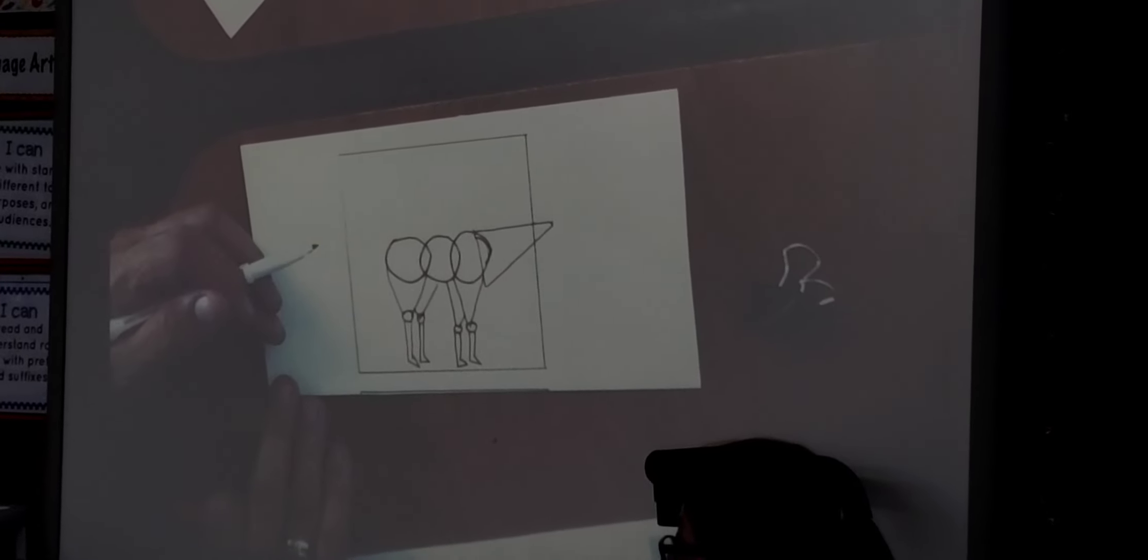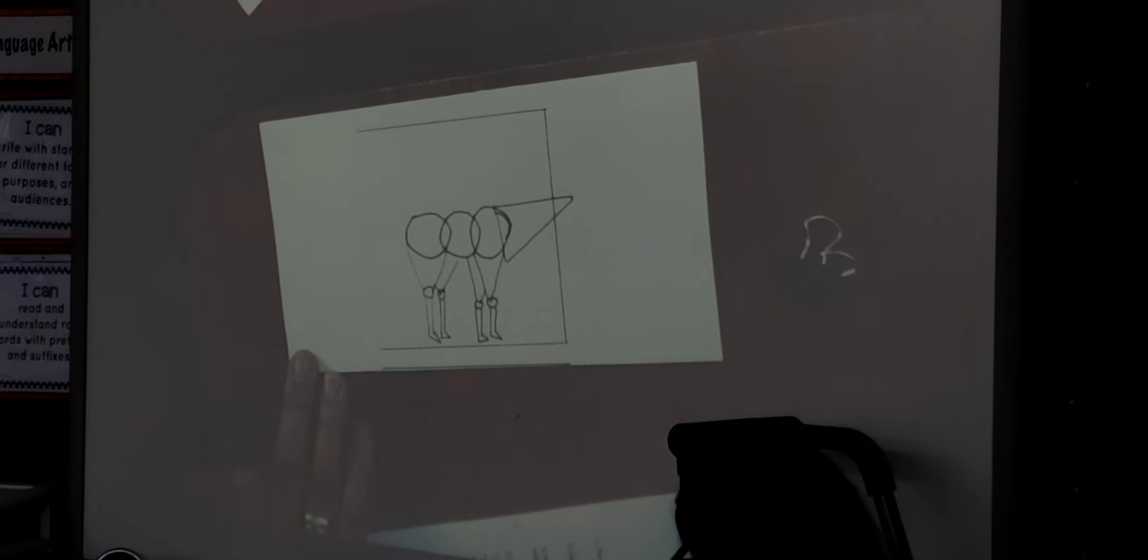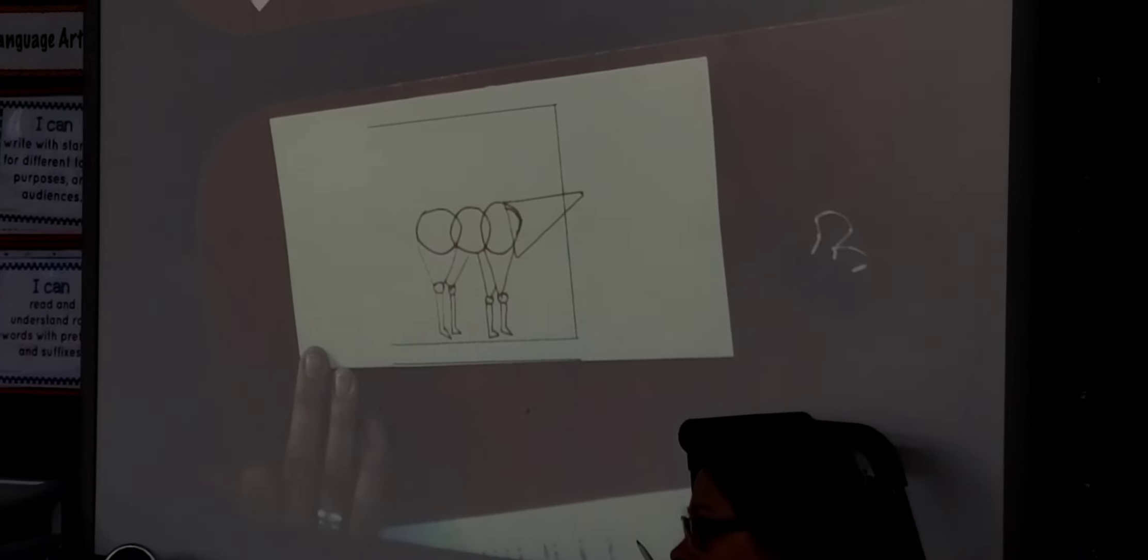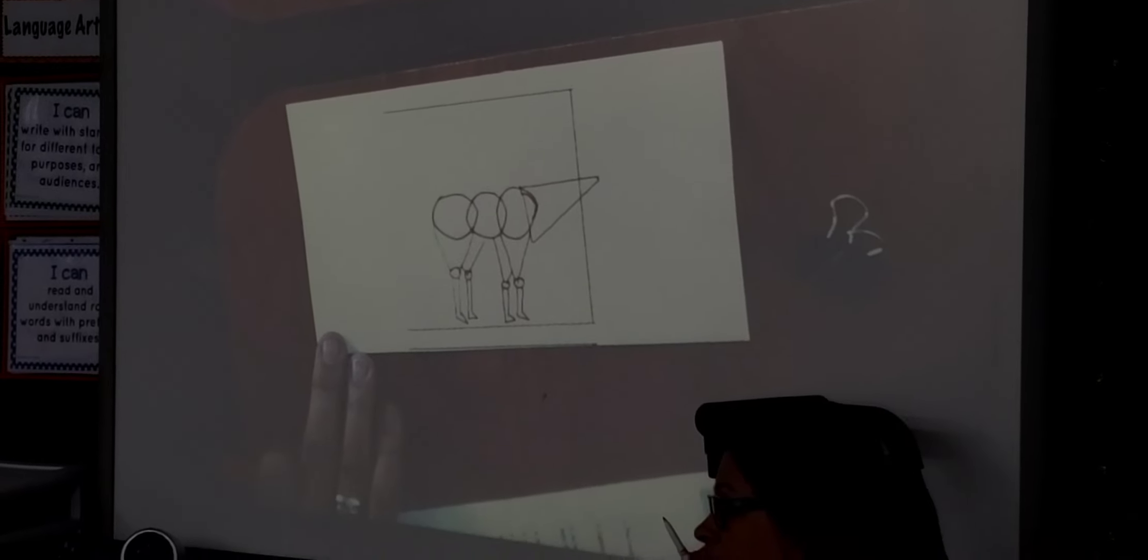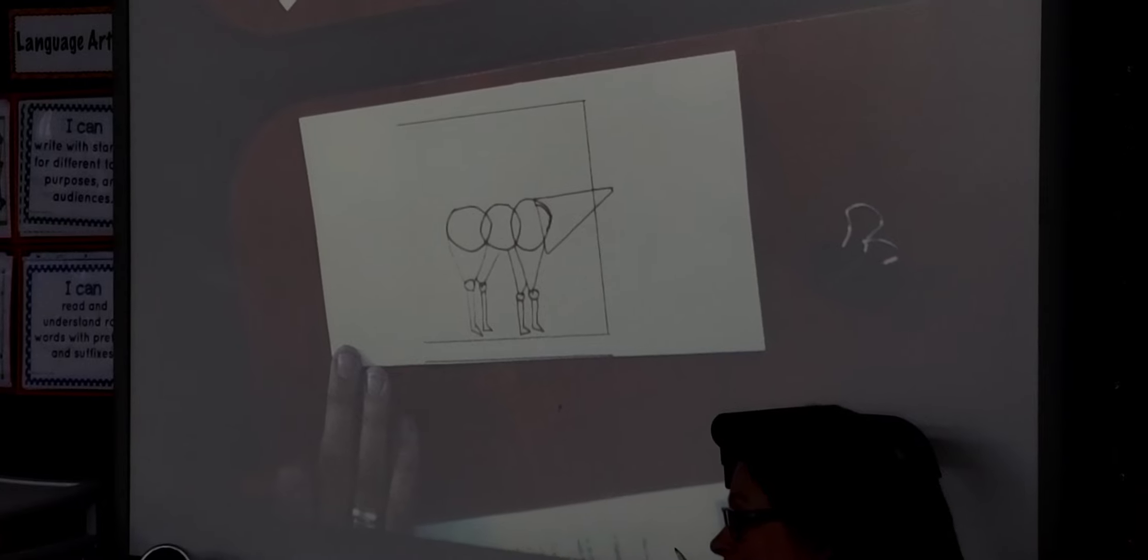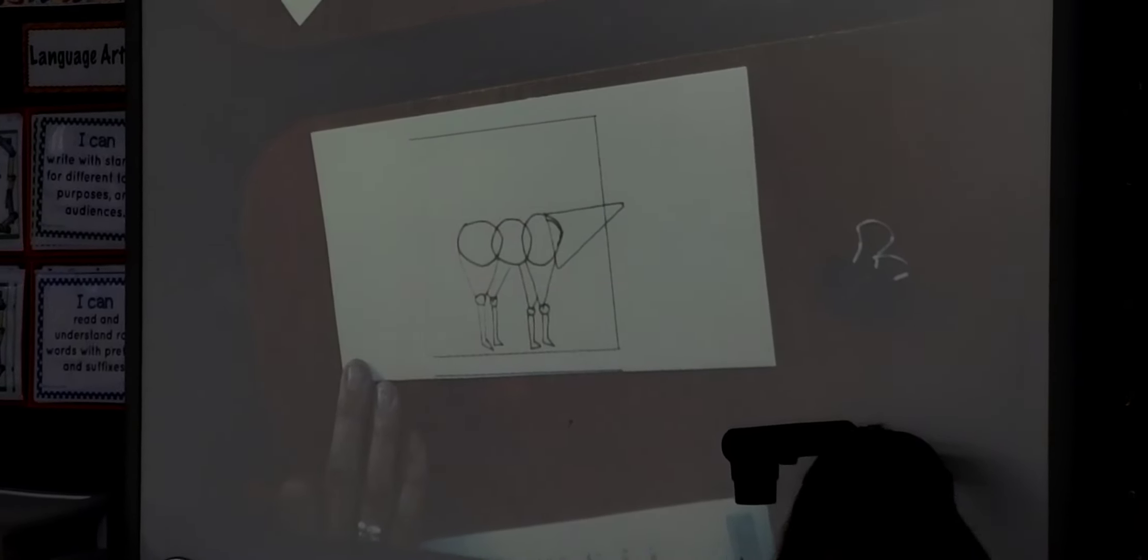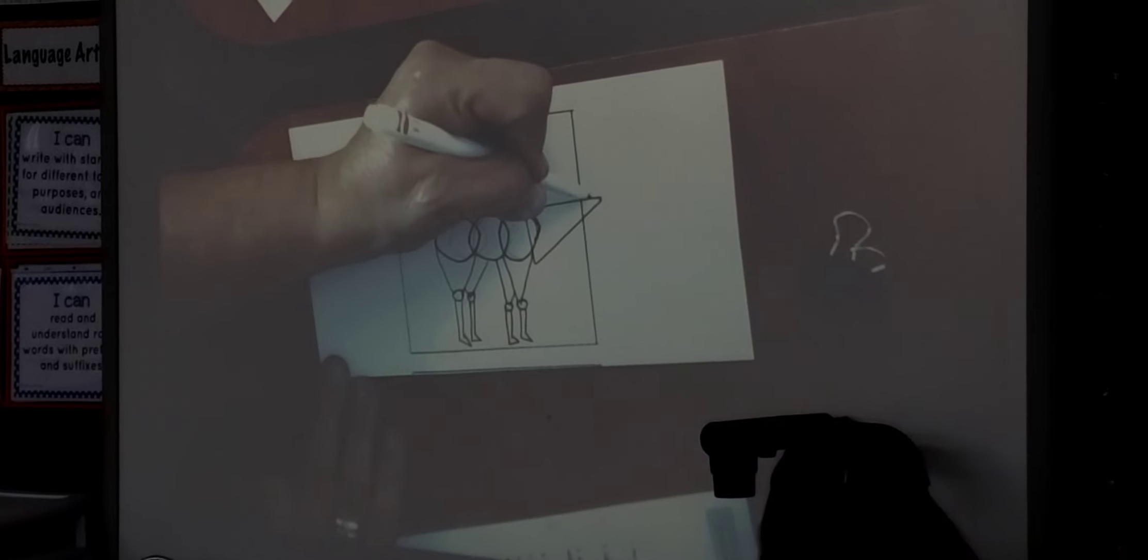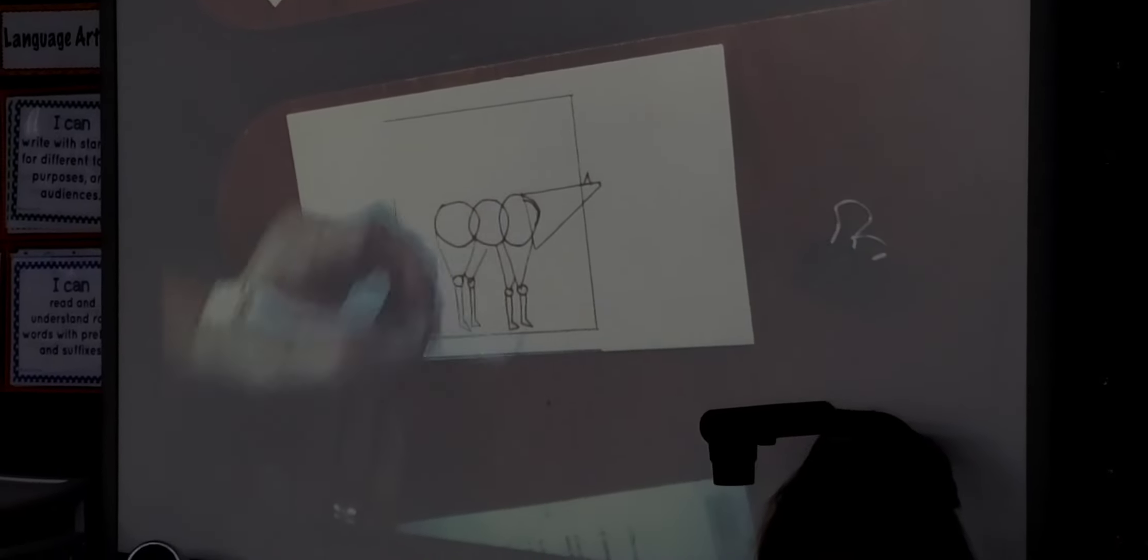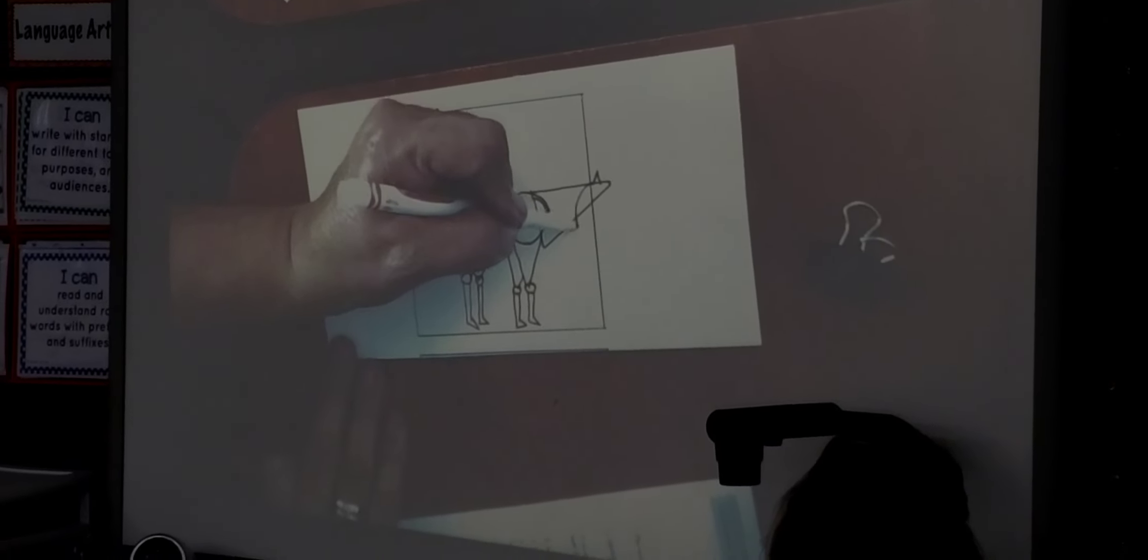You have your four legs because you're just making it out of shapes right now. Okay, then you're going to make a triangle here and a circle here.